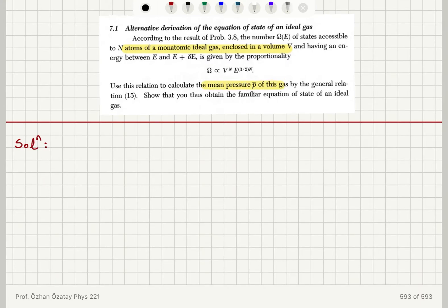By the general relation 15, show that you thus obtain the familiar equation of state of an ideal gas.